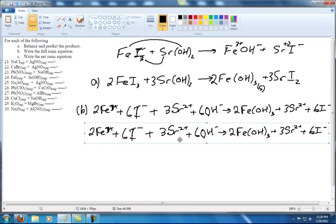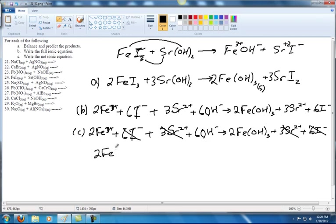Alright, now remember this is for part C that we're doing right now. So you can see what's going to happen is that the six I negatives will cancel. The Sr2 pluses will cancel. And the 2Fe3 plus plus 6 OH minus gives 2Fe(OH)3. And as we said that's a solid.